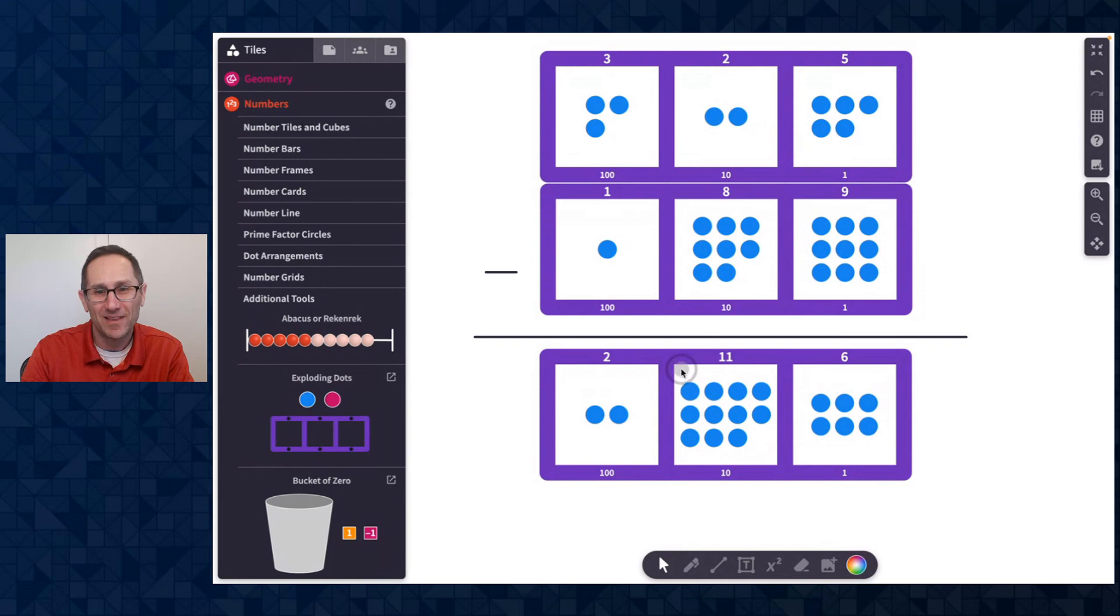And I need to subtract eight of them. I see those in a four by two array. I'll hit delete. And again, I have 236. So three great ways to create meaning to represent 325 minus 189.